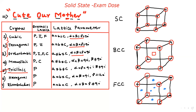For triclinic — it is the total unsymmetrical system, so all edge lengths and all angles are not equal. For monoclinic, edge lengths a, b, c are not equal, but among the angles only beta is not equal to 90; alpha and gamma are both 90.